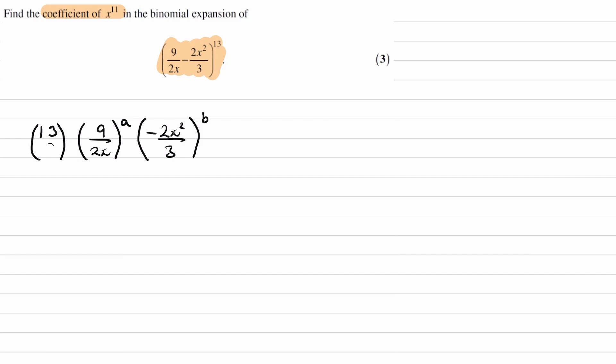Now, this number that we have over here could be either a or b. It doesn't actually matter which one it is. Pascal's triangle is symmetrical. So 13 choose a, 13 choose b. It'll give you the same number, so I'll just put this as a.